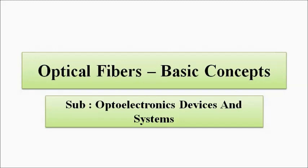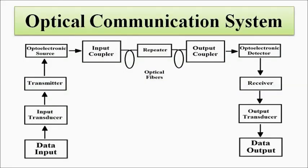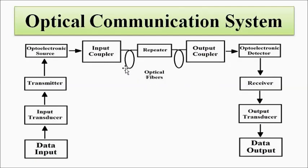The most important part we discussed in the optical communication system is the block diagram representation. The most important part of this whole communication system is the channel — the link between all these blocks, the source and the destination, the sender and the receiver. In an optical communication system, that communication channel — that link that connects the sender and the receiver, the source and the destination — is the optical fiber.